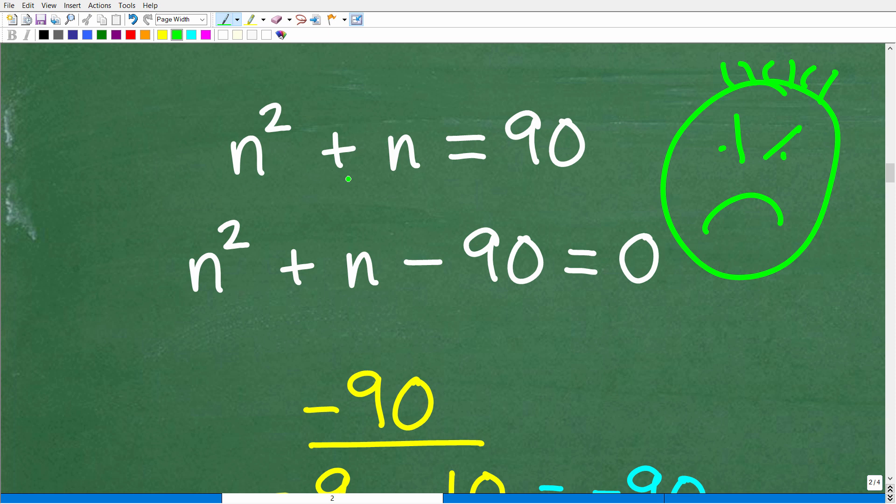N squared plus N is equal to 90. This is a quadratic equation. But this little 2 right here means that there are two solutions. You always have two solutions when it comes to a quadratic equation. So how do we solve quadratic equations? This is a big topic in and of itself.